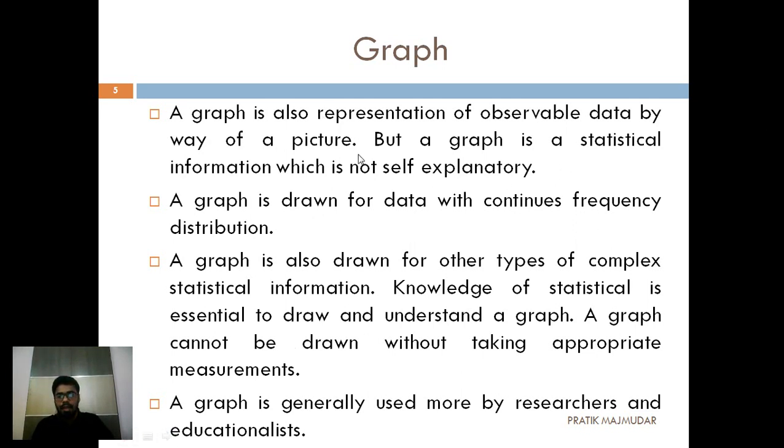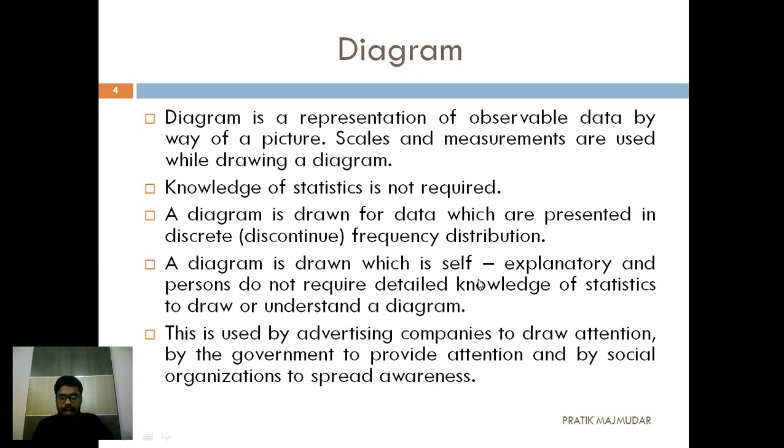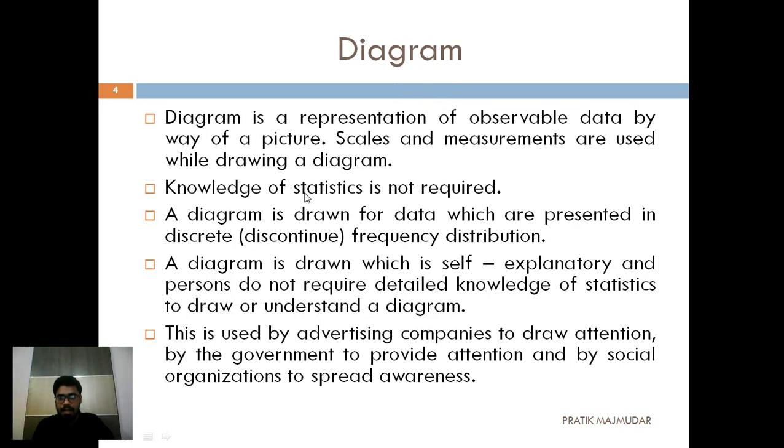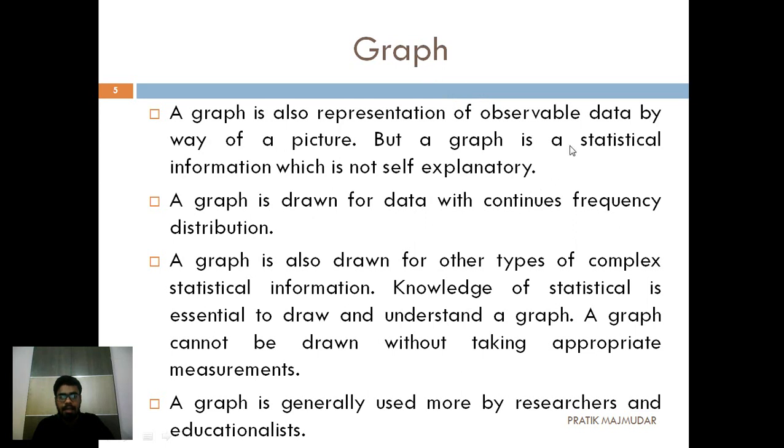Now what is graph? For a graph, you need the statistical information. Here you can see that a graph is a statistical information which is not self-explanatory, where a diagram was self-explanatory. Just see the cursor. The diagram is a self-explanatory feature but when it comes to graph, it is not self-explanatory. The statistics is not required for diagrams. When it comes to the graph, the statistical information is required. So a graph basically works with the data which are continuous frequency distribution. That means the data which is written in a continuous manner can be helpful when we are preparing the graph. When the statistical information becomes complex, we can use the graph and with the appropriate measurement, it can be presented in a good manner. Basically, this is used by the researchers and the educationalists.